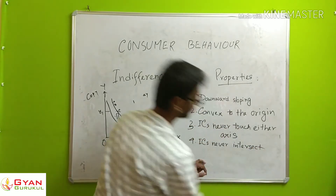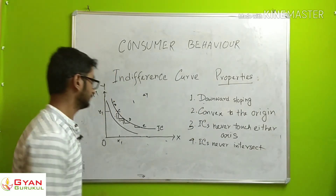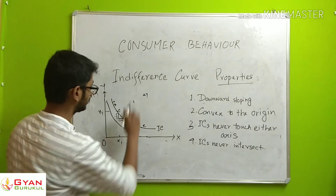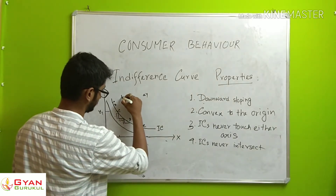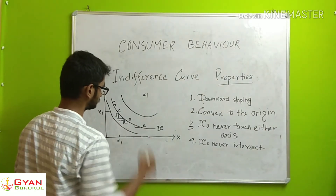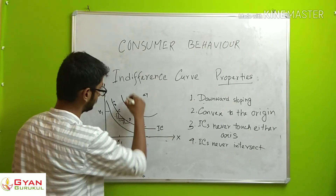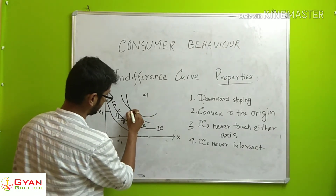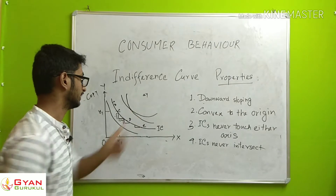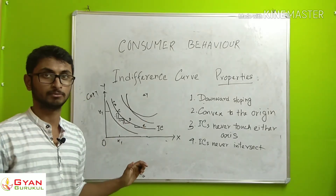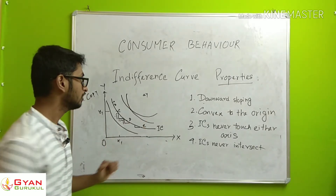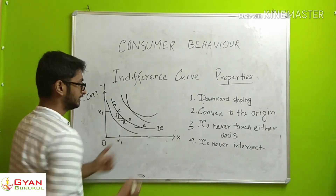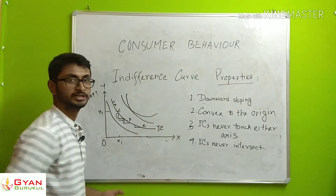Property number four: indifference curves never intersect. Two ICs — IC A and IC B — cannot intersect each other. This is not possible.